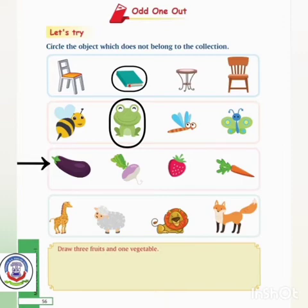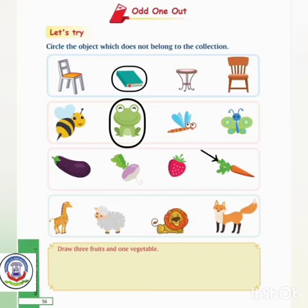Now look at the picture and observe which does not belong to the collection. The first is brinjal, the second is onion, and the fourth is carrot. Strawberry is different from all because strawberry is not in the category of vegetables. So we will put a circle over it.